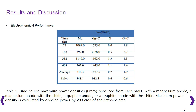Results and Discussion. Table 1 shows the time course maximum power density produced from each SMAFC with a Magnesium anode, a Magnesium anode with Chitin, a graphite anode, and a graphite anode with Chitin. Maximum power density is calculated by dividing power by 200 cm² of the cathode area. The four SMAFCs were operated in open circuit mode for the initial 50 hours, and in closed circuit mode during the remaining 800-hour operation. Average maximum power density was highest in Magnesium plus Chitin, followed by Magnesium, Graphite plus Chitin, and Graphite.